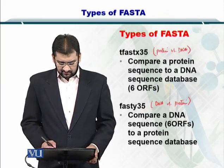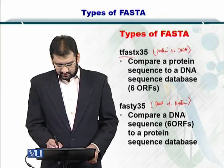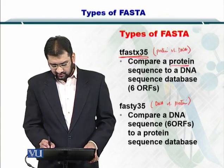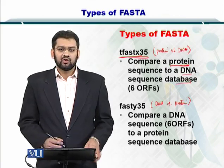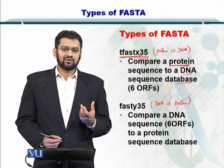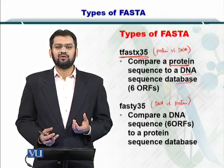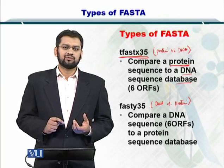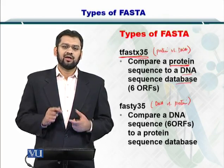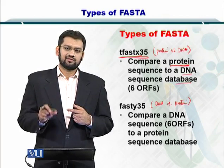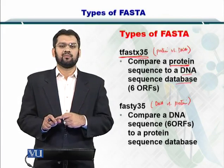The third type is the T-FASTX35. It can help you to compare a protein sequence to a DNA database. So your query is a protein sequence, while on the database side, you have a DNA database. What you do is take one sequence from the nucleotide database, compute all six ORFs and translate them into proteins, and then perform the comparison.